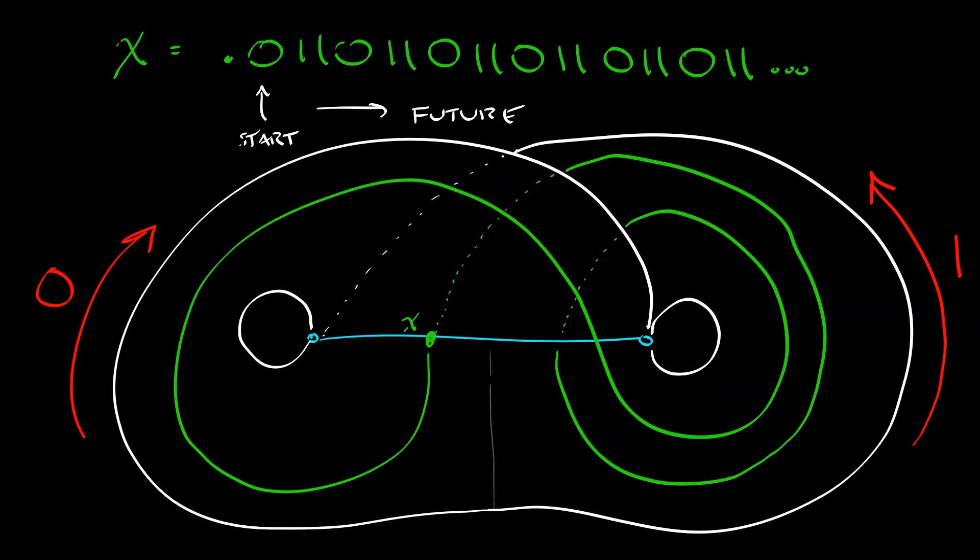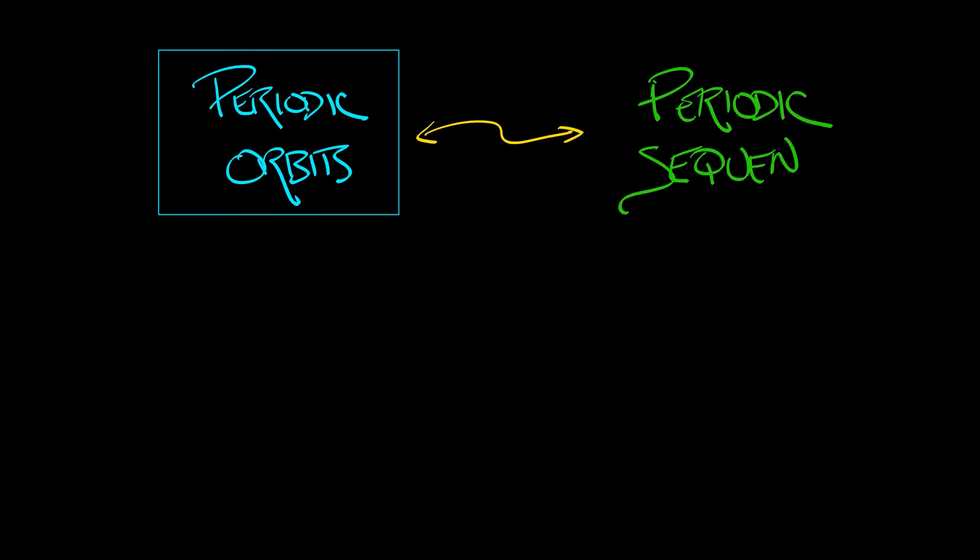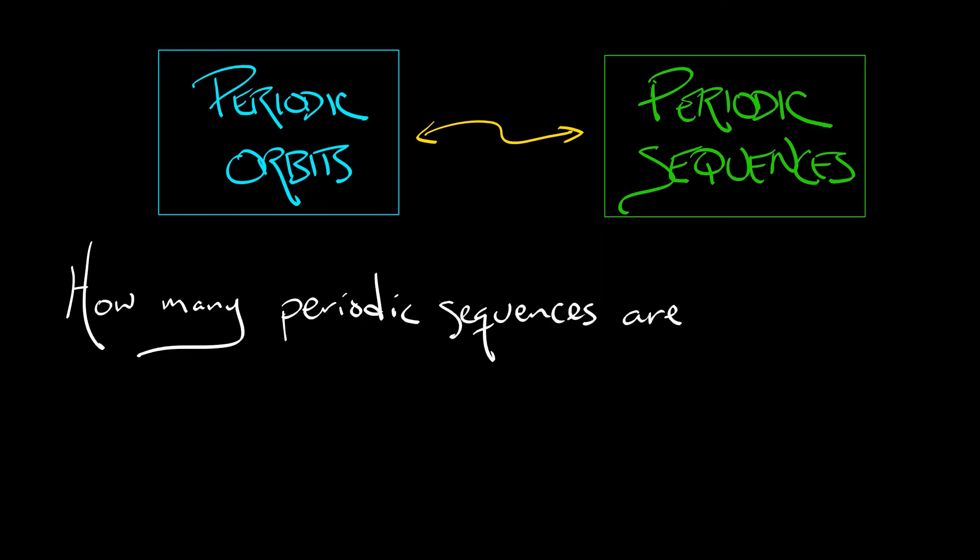It takes three trips around the attractor to come back to where you start. The conclusion from our observations is that the set of periodic orbits on the geometric Lorentz attractor are in bijective correspondence with periodic sequences in zeros and ones. So to our theorem, how many periodic sequences are there of period n? That means you have n digits before it repeats.